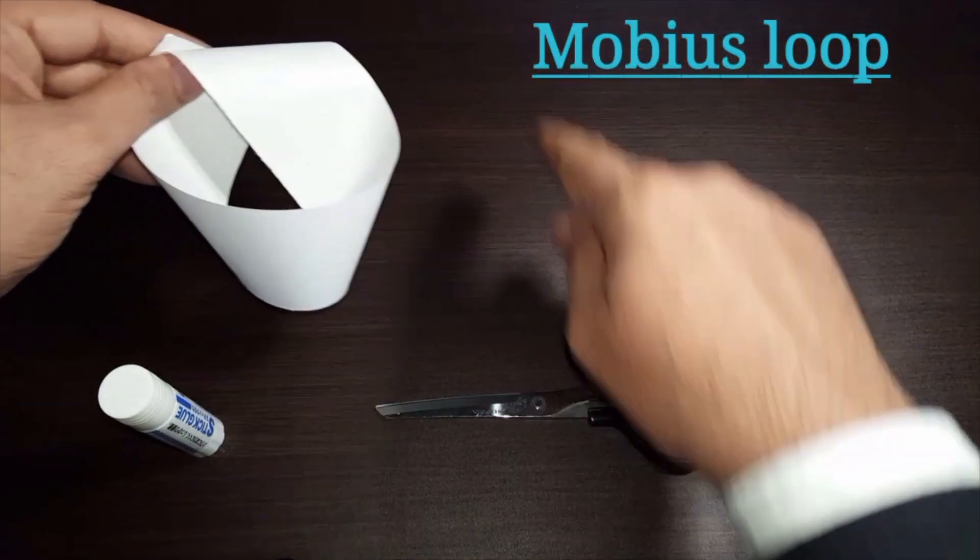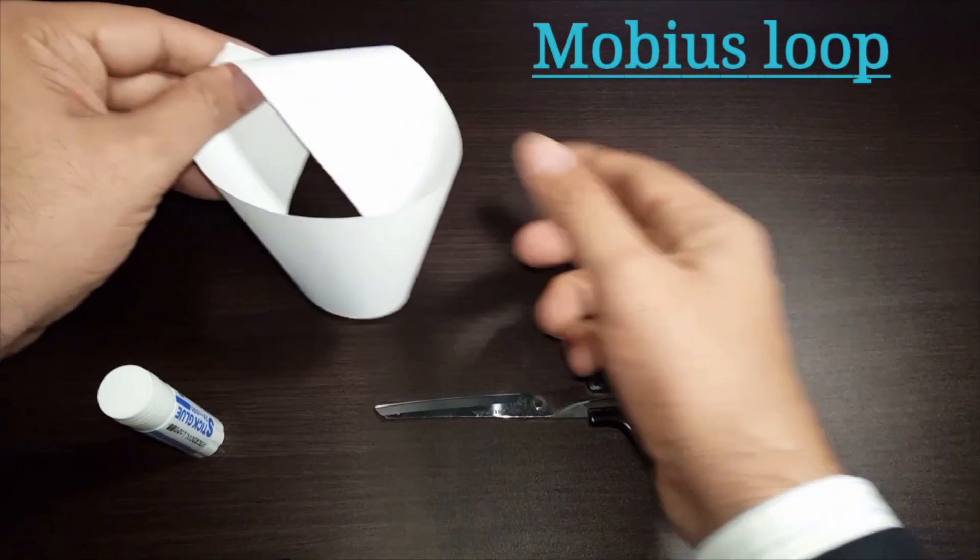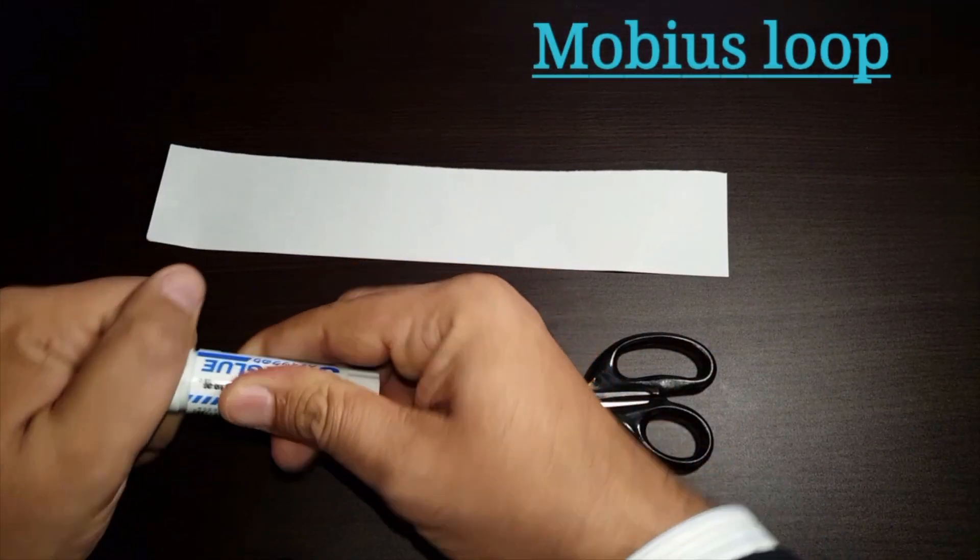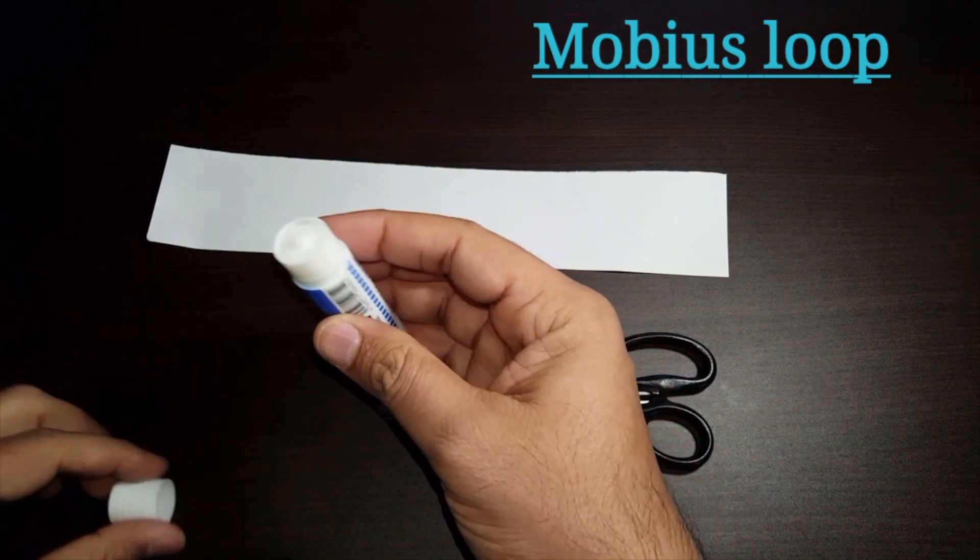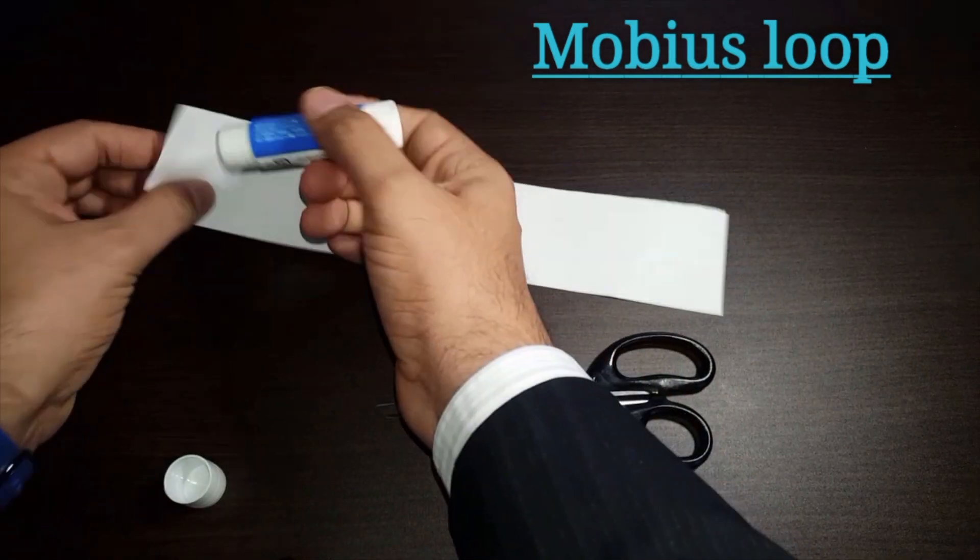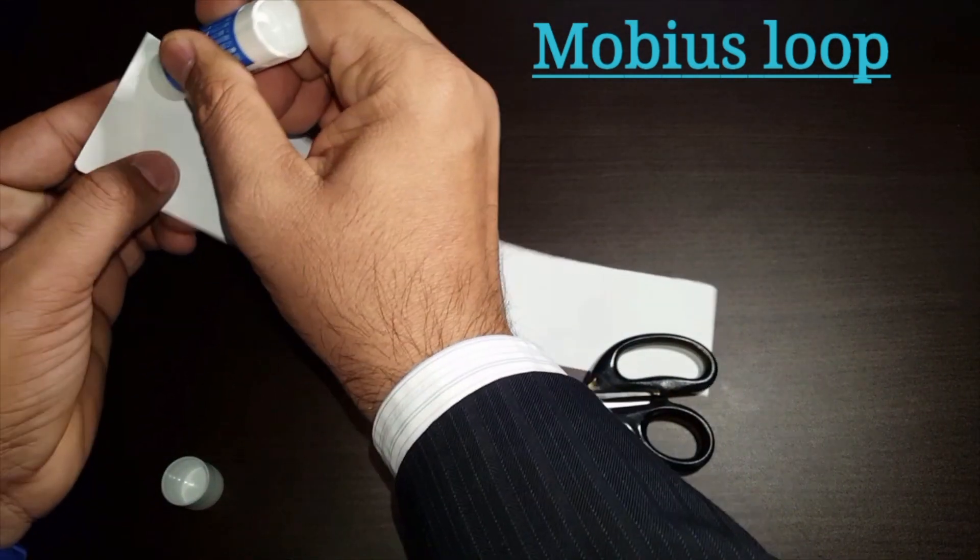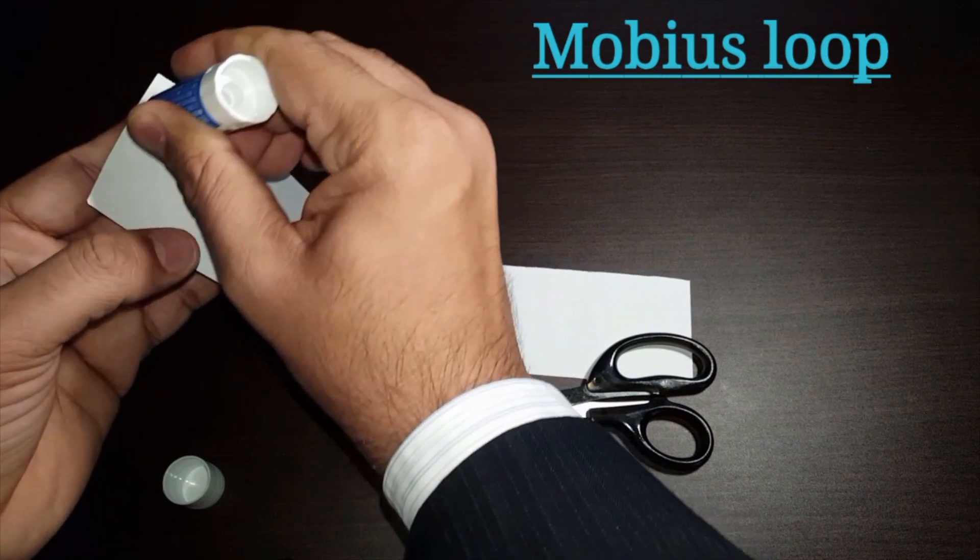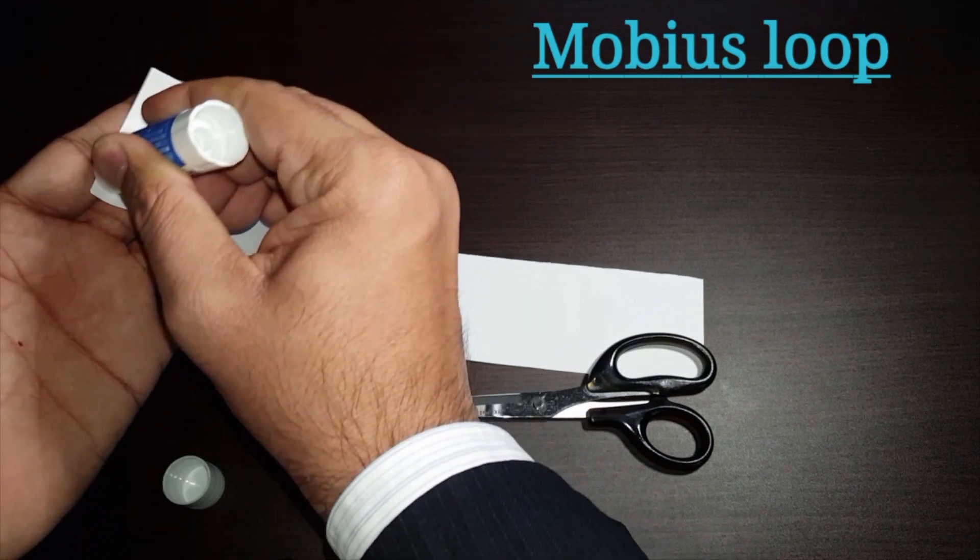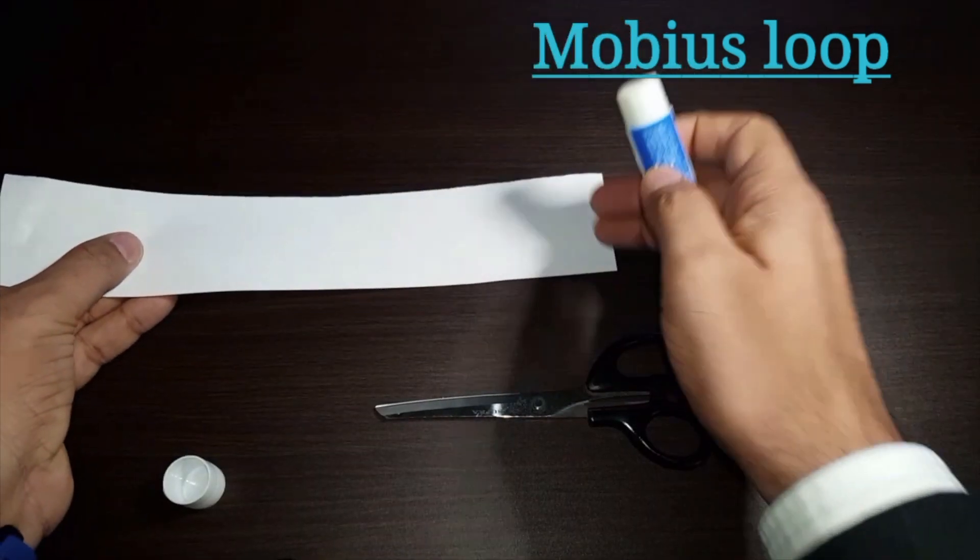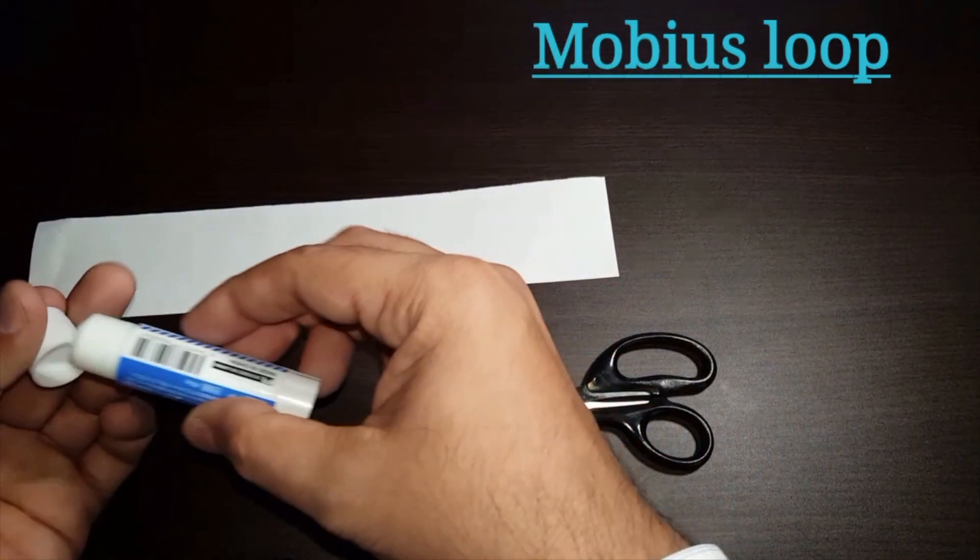And this Mobius loop is magical. Now, let's do it. So first, take the glue stick and glue, use this adhesive on one side of the paper strip. So yeah, use it liberally because it needs to stick the other side of the paper.